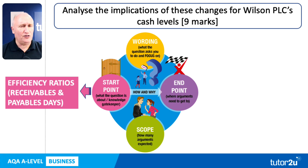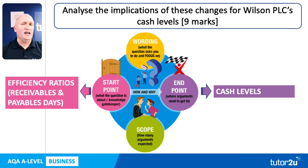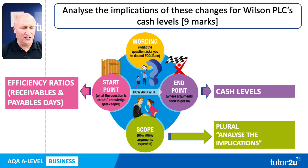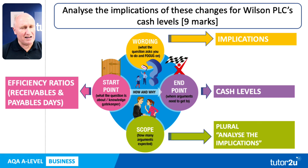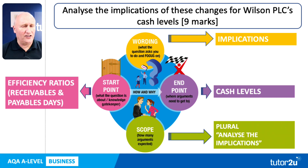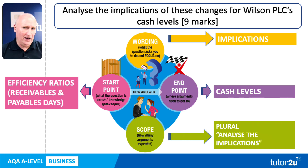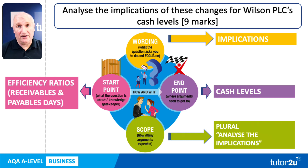To respond to this question, we need to consider the implications for the cash levels of Wilson as a consequence of changes in the ratios. This question clearly required two responses — two paragraphs, two pieces of analysis in context: one dealing with receivables days, one dealing with payables days. We need to consider the implications, either positive or negative, increase or decrease, for cash levels.